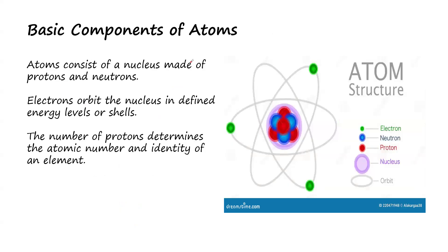So the basic concept of atoms: atoms actually consist of the nucleus, which is made up of protons and neutrons. So in the nucleus of the atom, as I mentioned earlier, we have protons and then we have neutrons. We can see clearly here — this is the nucleus. And in the nucleus, we have neutrons in blue and we have protons. The electrons orbit the nucleus, and that orbit is defined by energy levels or shells. This is an orbit, and the orbit or the shells of the atom contain the electrons.